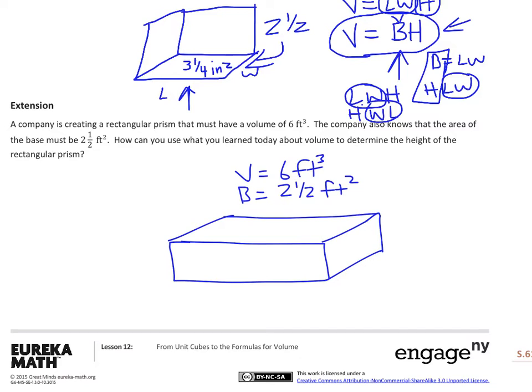So this is what they're going to be talking about in lesson 12. Let's try an example using our new formula. This is called extension. We have a rectangular prism, a box of some sort, with a volume of six feet cubed. It says that the base must be two and a half square feet. So we know the bottom layer, the base, the very bottom of it. If you could pick this up and stare at the bottom, its area is two and a half square feet. We want to know the volume.